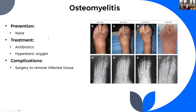There is no real prevention. Treatment includes antibiotics and sometimes hyperbaric oxygen therapy, which can affect anaerobic species and aid wound healing. Complications may require surgery to remove infected tissue, potentially resulting in loss of digits, limbs, or permanent scarring.